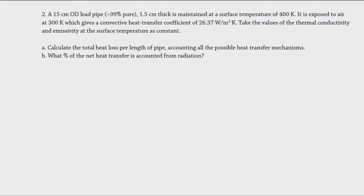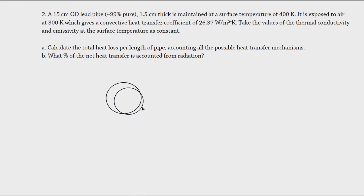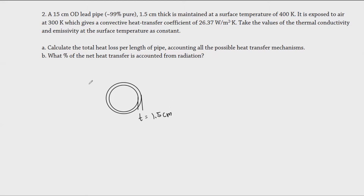For the second problem, we have a pipe with an outer diameter of 15 cm and a thickness of 1.5 cm. Let me draw this first so we can have an idea of how it looks. The outer diameter is 15 cm and the material is lead, which is 99% pure.